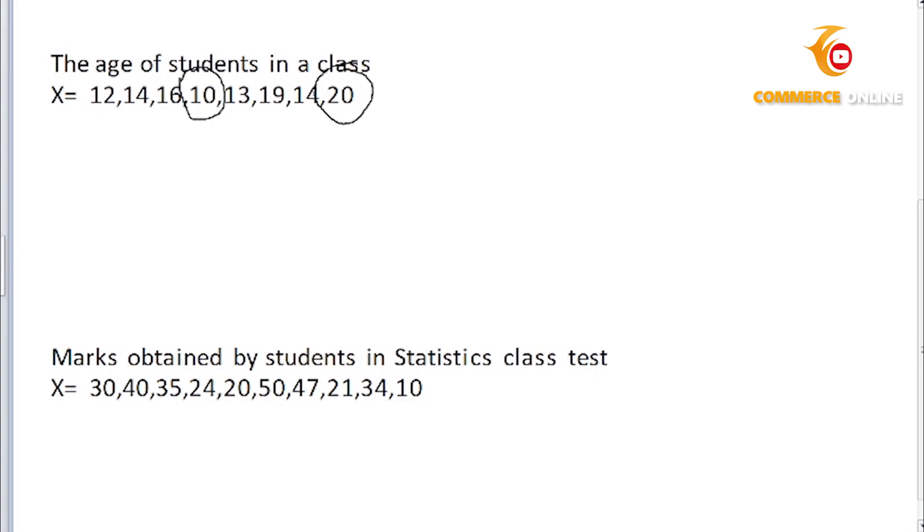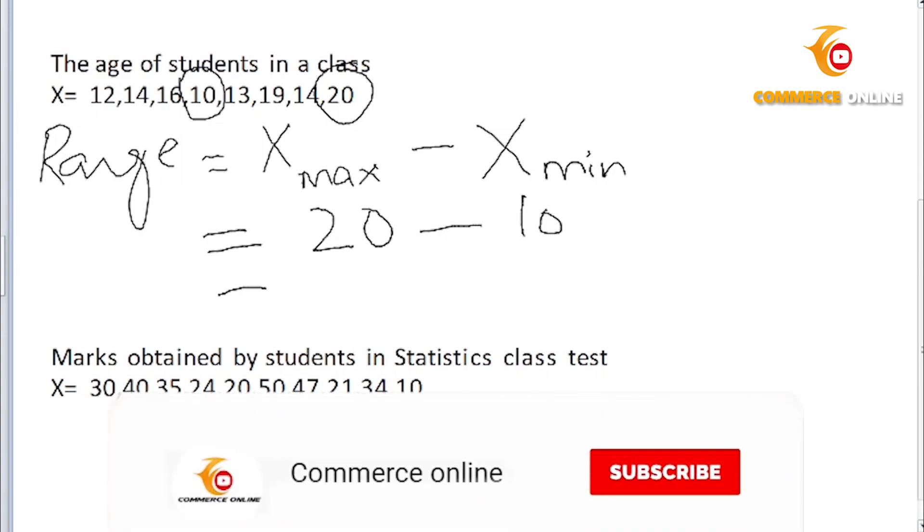We are calculating range and the range formula that we have is: maximum value minus minimum value. So we have X max minus X min. The maximum value is 20 and the minimum value is 10, so the range is 10.